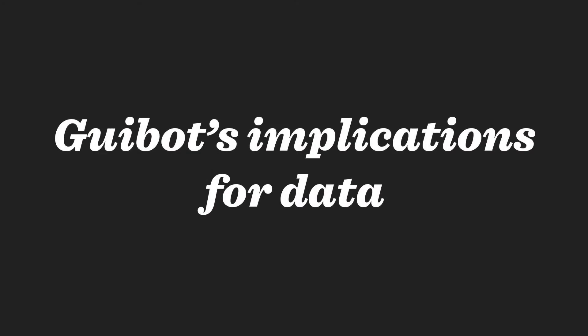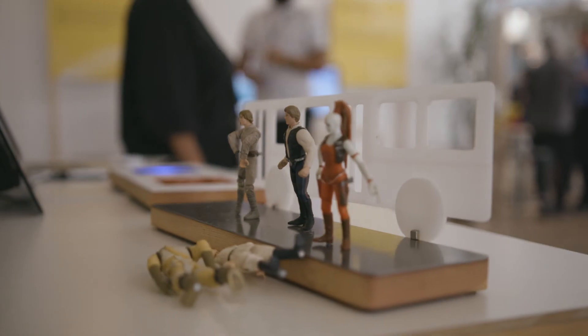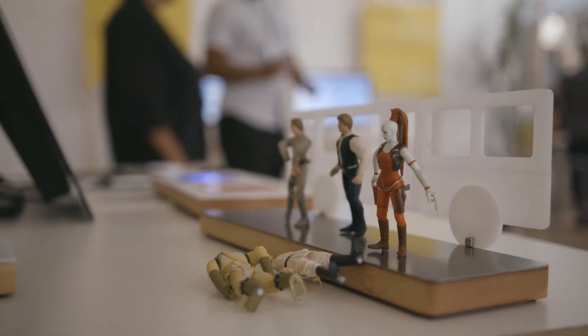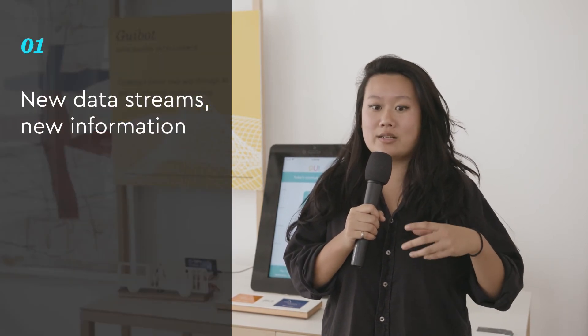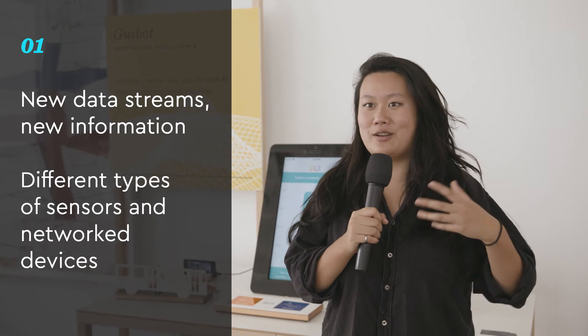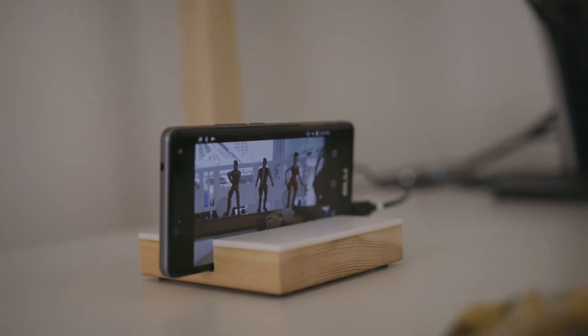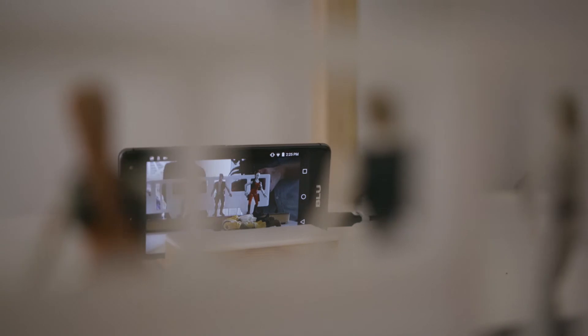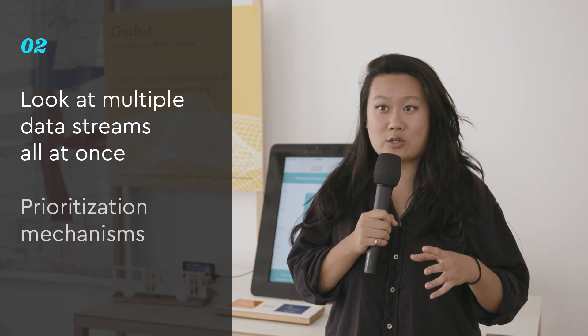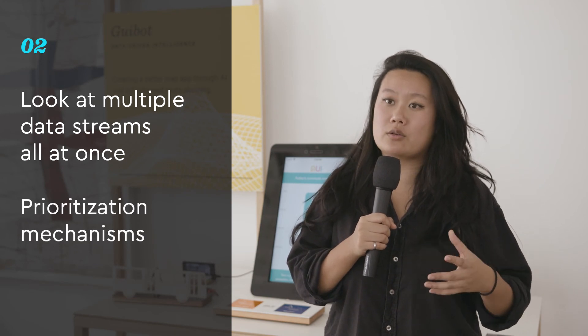GUI-BOT is one of the most important things that we're looking at in the future. We're really looking at two main things about data. The first is that in the very near immediate future, we will have all these new types of data streams, all this new information, and different types of sensors and networked devices that will give us new information about our world. The second really important thing about GUI-BOT is we're able to look at multiple data streams all at once and figure out the prioritization mechanisms — what is the most important — so that we're not just inundating people with a ton of information. We're extracting out the insights that are important for them particularly.